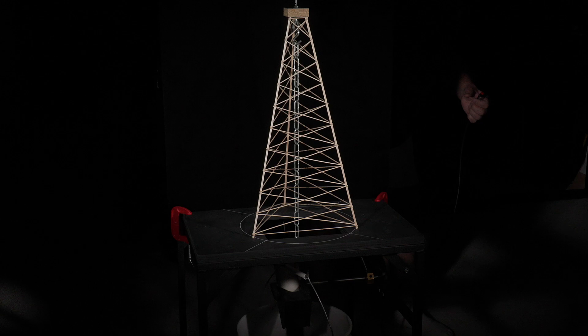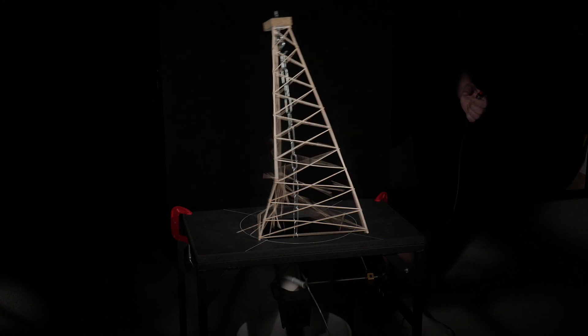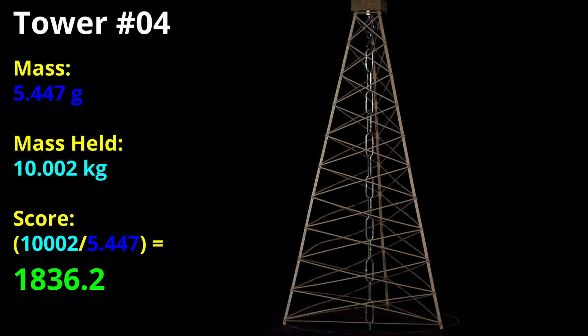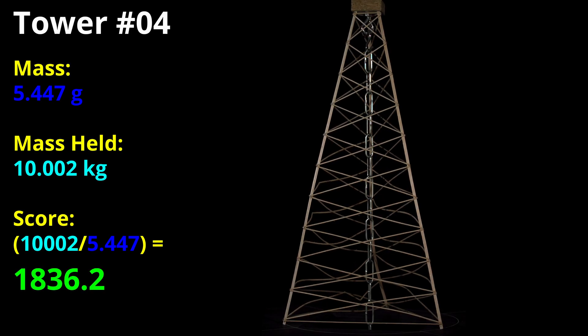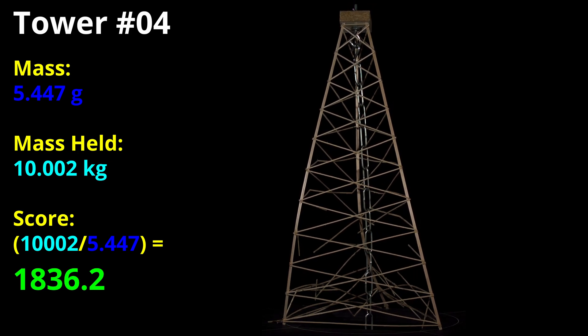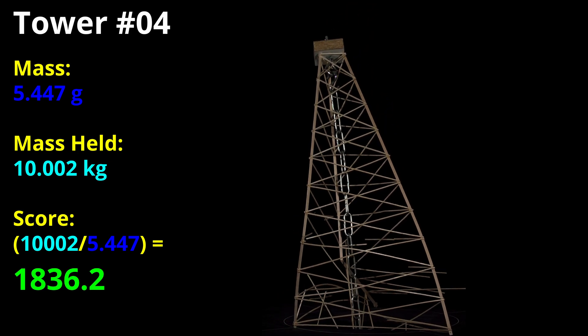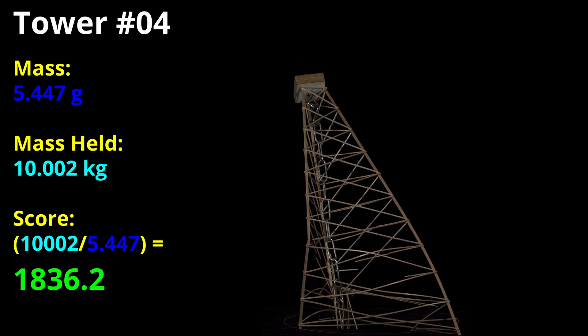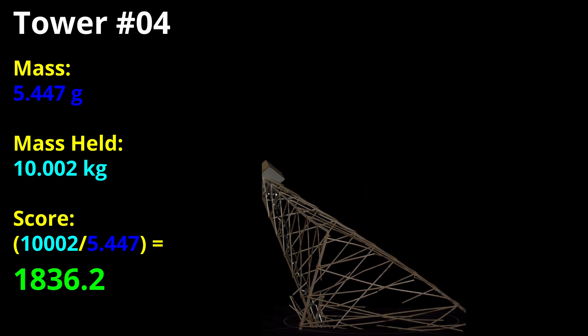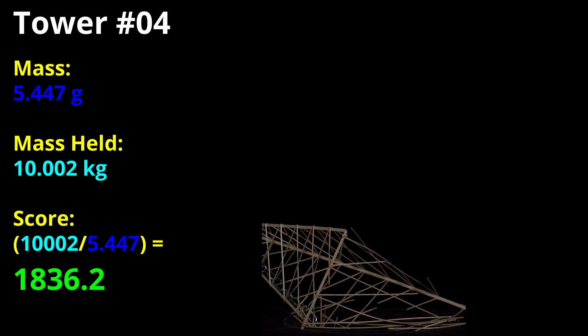So much work destroyed in so little time. This one held a fairly disappointing 10.002 kilograms for a score of 1836. The high speed footage clearly shows a problem with the cross bracing again, this time near the bottom. It is becoming very obvious that the cross bracing tends to be the primary problem with these three leg towers. That makes sense as they are longer than what we built with four leg towers, so we really need to beef them up to make sure they survive.